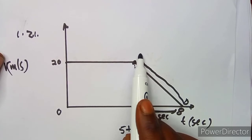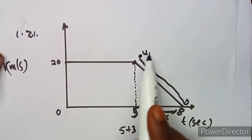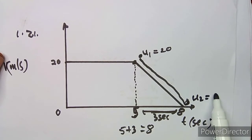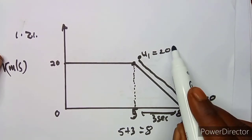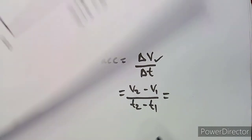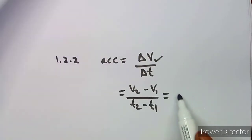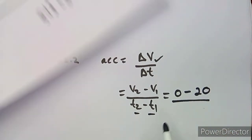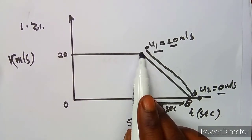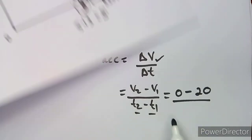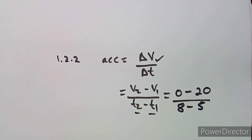In the last three seconds, the bus starts to decelerate. The initial velocity is 20 m/s and the final velocity, when it comes to rest, is 0 m/s. The initial time is t₁ = 5 seconds and the final time is t₂ = 8 seconds. So we substitute: a = (0 − 20) / (8 − 5).